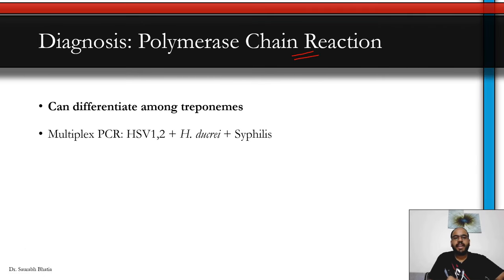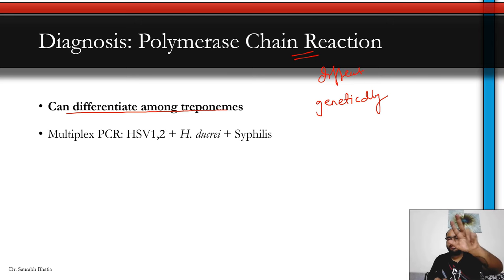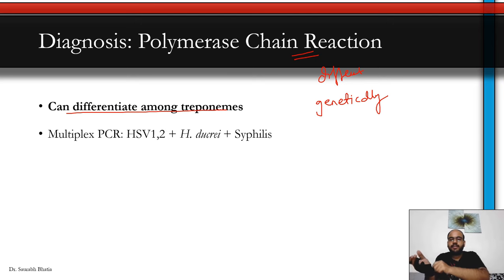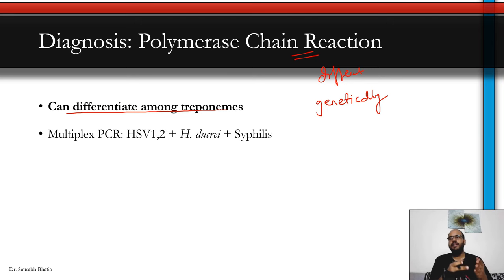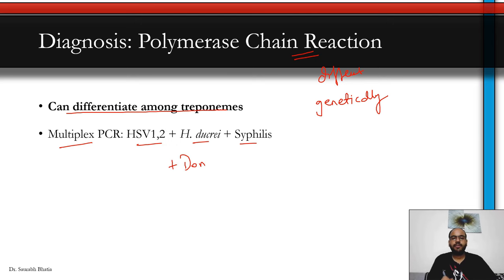Polymerase chain reaction can differentiate among different treponemes because they differ genetically. PCR utilizes the nucleic acid of the organism — since you have a PCR specific to T. pallidum pallidum, you can easily differentiate it from the endemic treponematoses. Multiplex PCR covers HSV 1/2, H. ducreyi, and syphilis. Adding donovanosis gives quadriplex PCR. Treponemal and non-treponemal tests will be touched upon briefly, with full detail reserved for the separate diagnosis video.